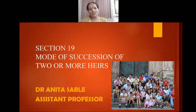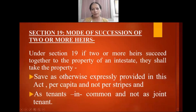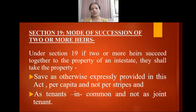Good morning students. Today we'll be dealing with the provision of Section 19, that is the mode of succession of two or more heirs. In this particular provision we'll be dealing with how two or more heirs succeed together to the property of an intestate, and they shall take the property according to the provision — that is per capita and not per stripe.